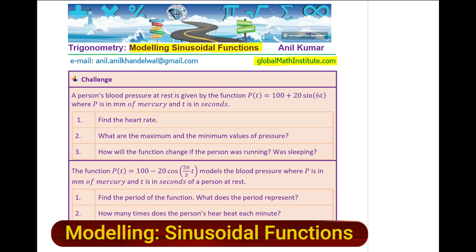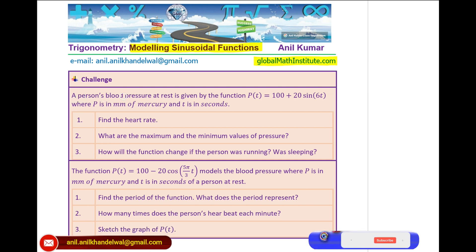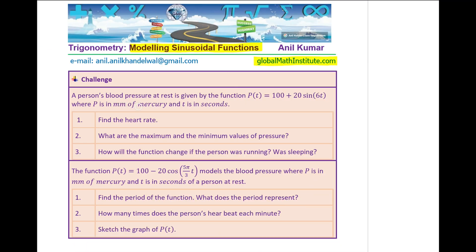The question here is: a person's blood pressure at rest is given by the function p(t) = 100 + 20 sin(6t), where p is in millimeters of mercury and t is in seconds. You need to find the heart rate, the maximum and minimum values of pressure, and how the function will change if the person was running or sleeping.